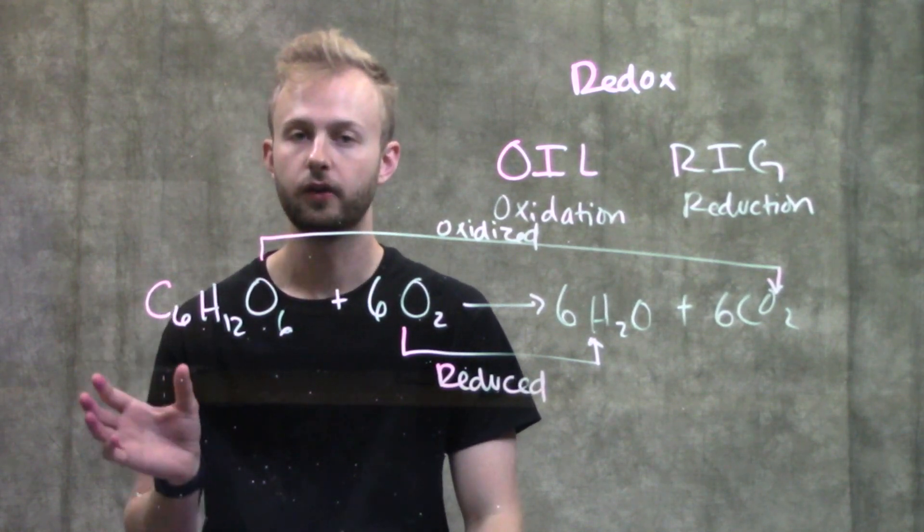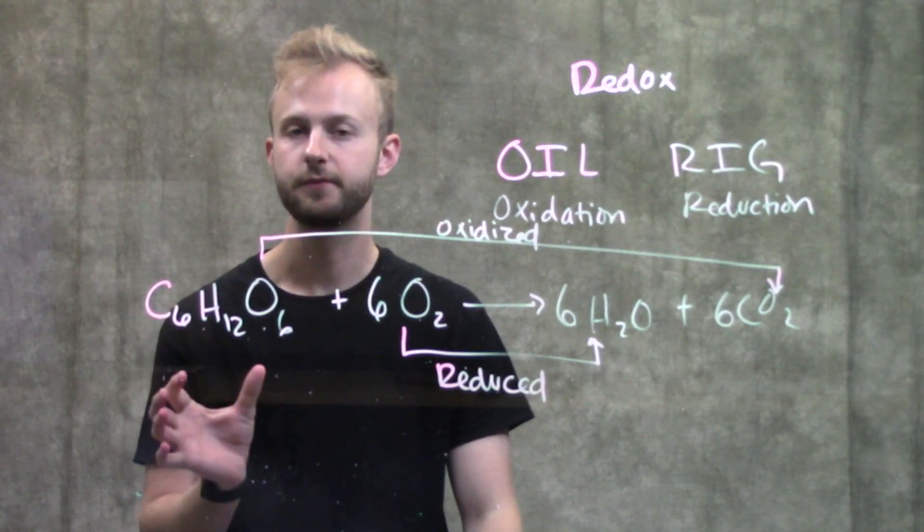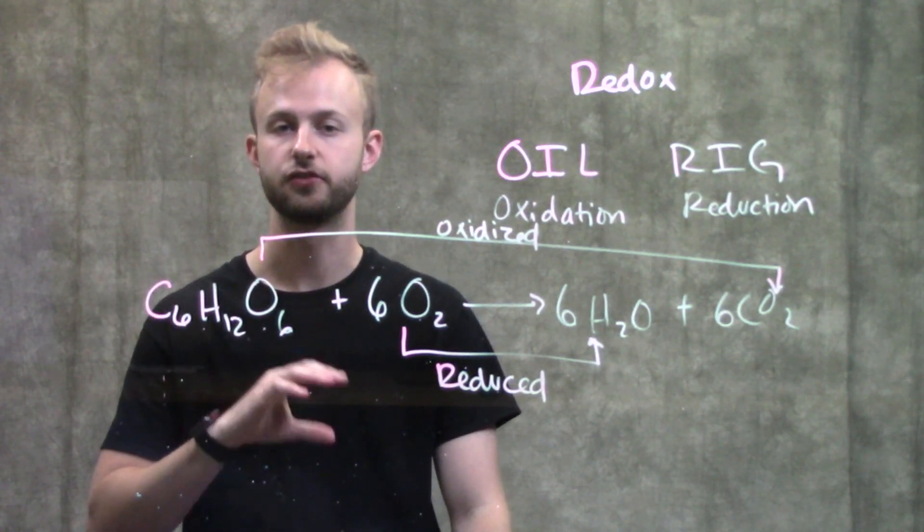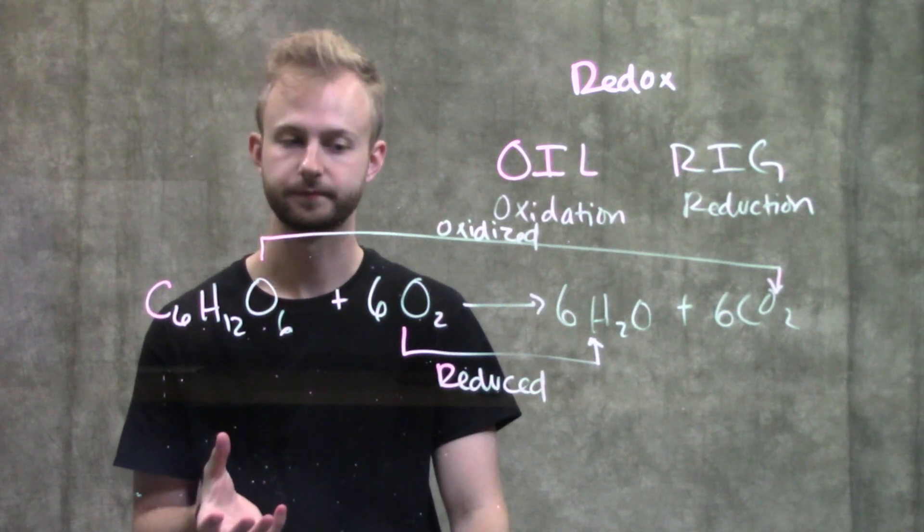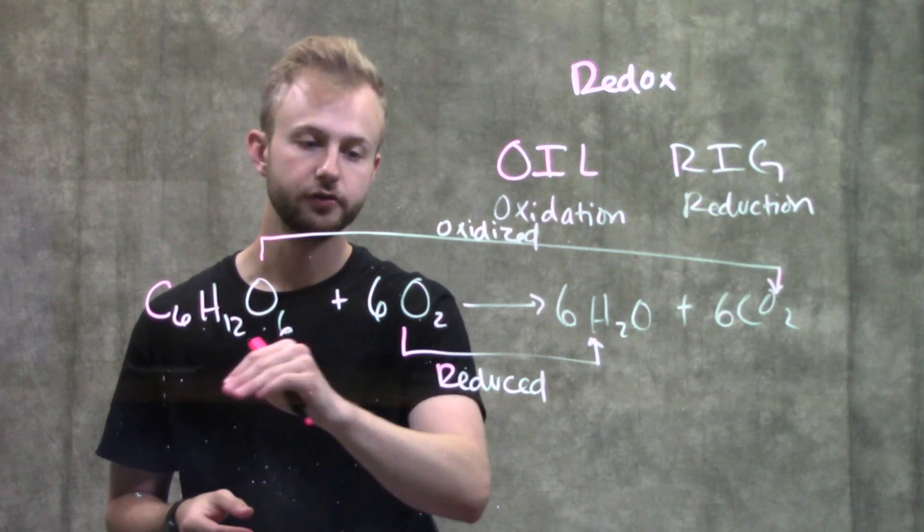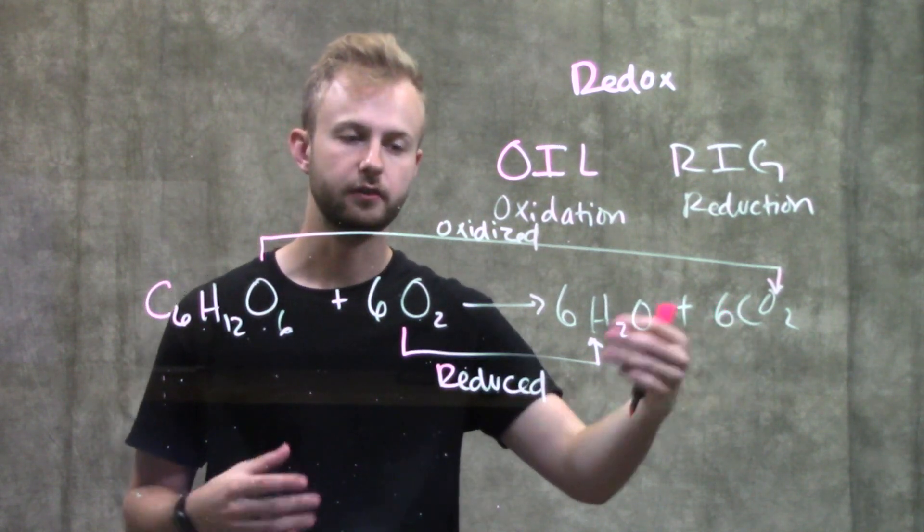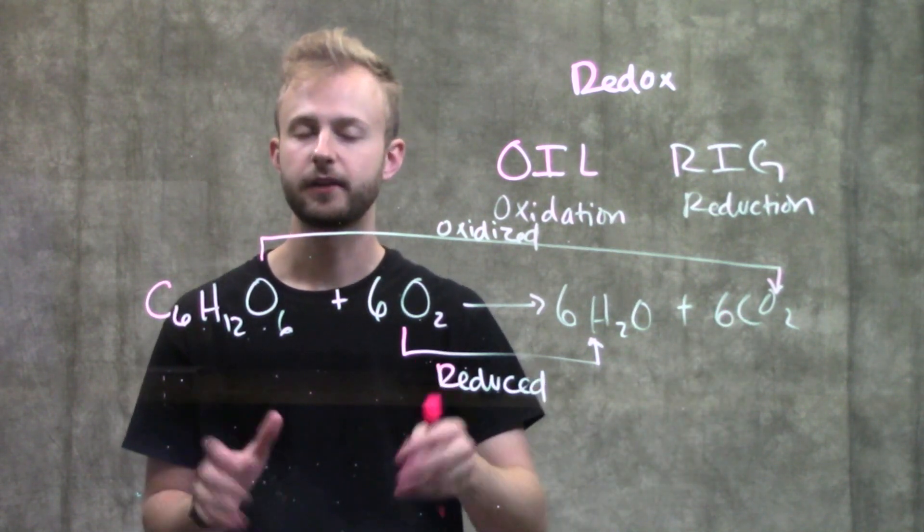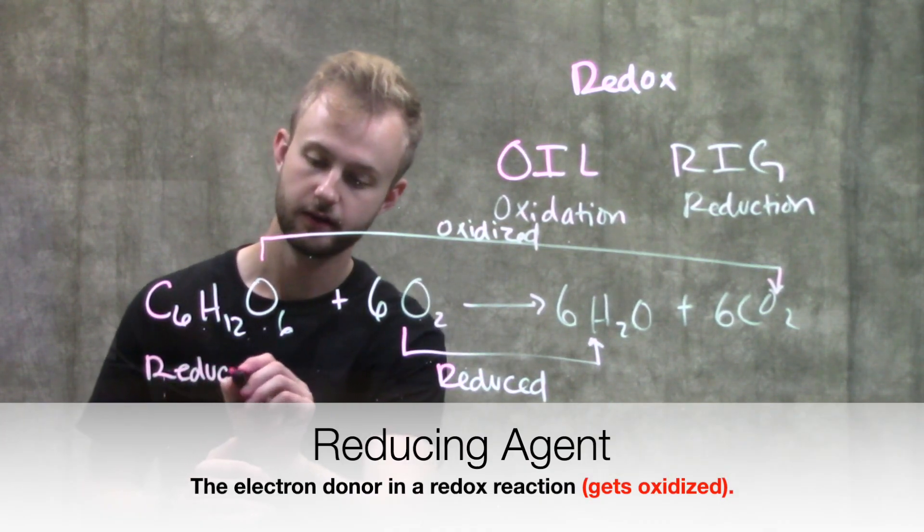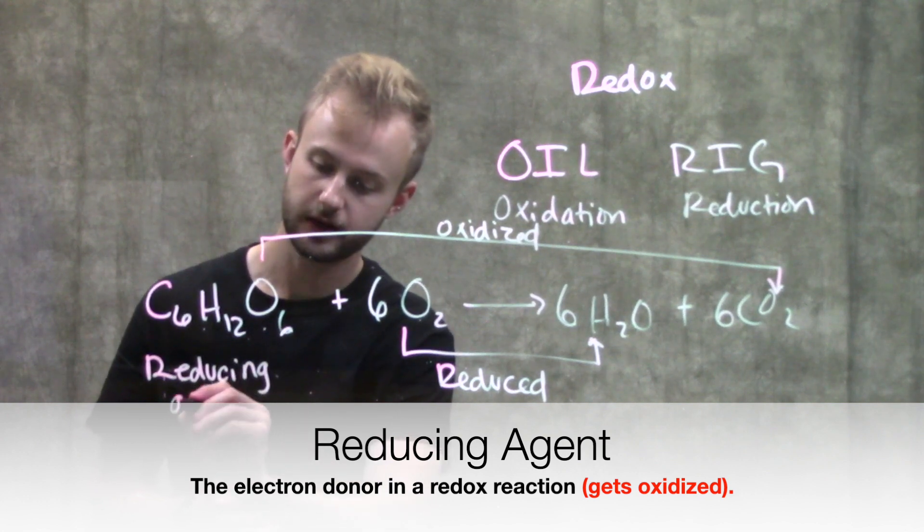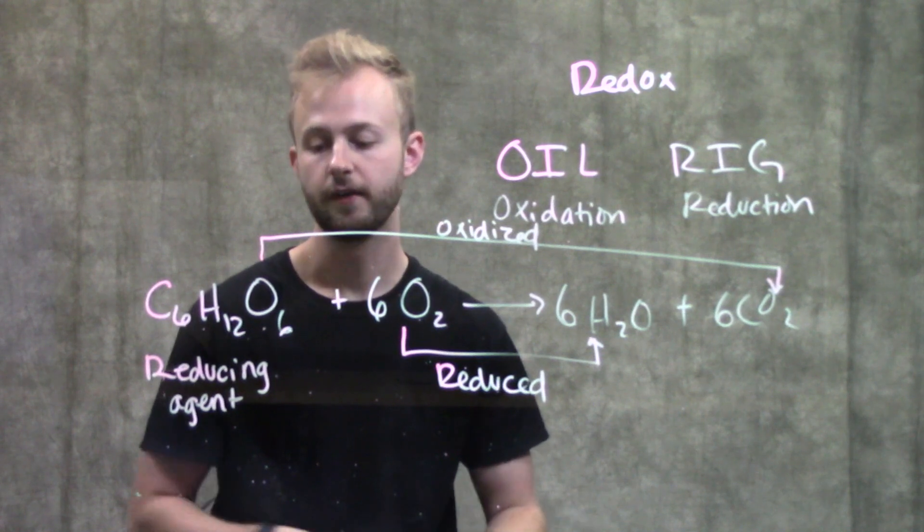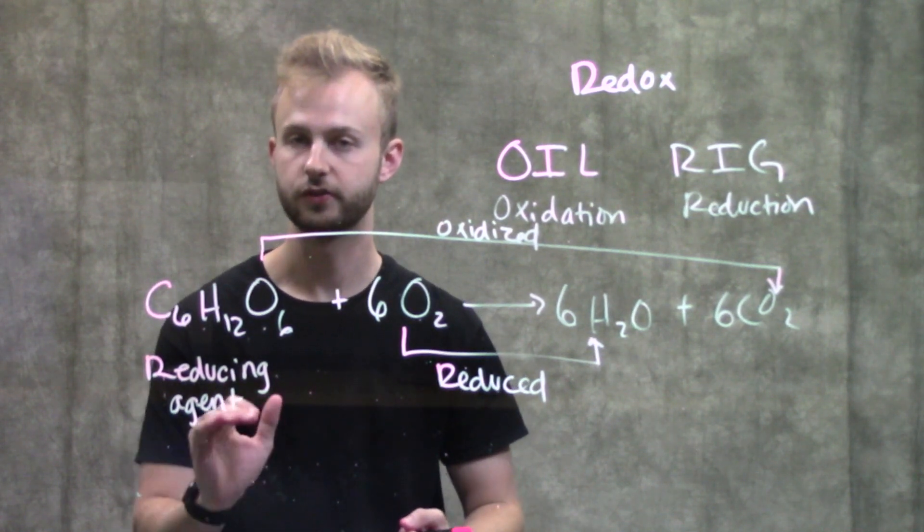Now we have different names for the thing that's becoming reduced and the thing that's doing the reducing. Since glucose is becoming oxidized, it's losing electrons, so something else has to be gaining them. This is our reducing agent because through losing its electrons, it's causing something else to be reduced by gaining those electrons.